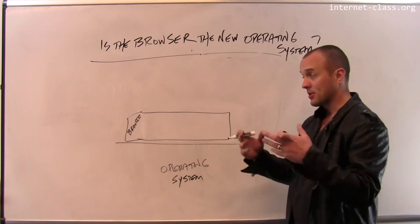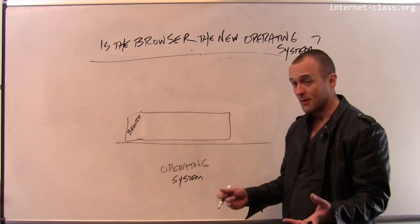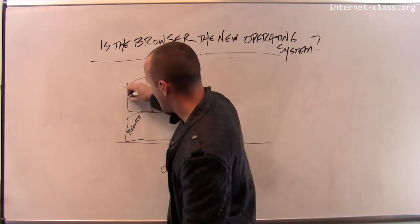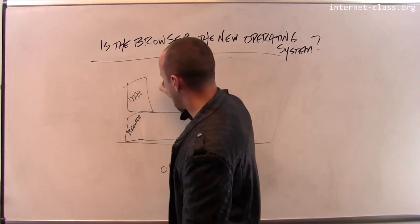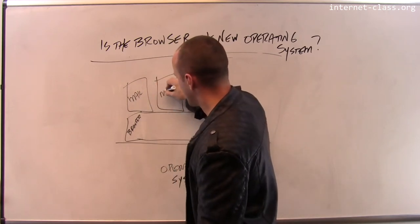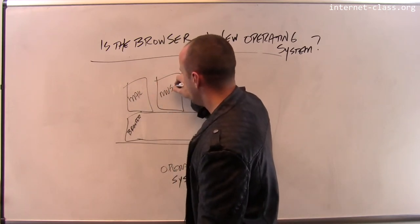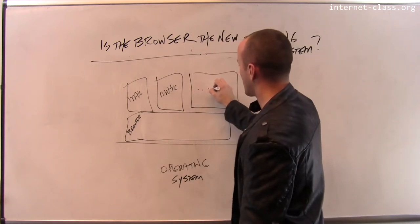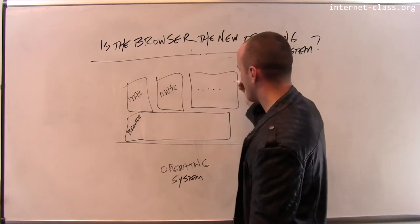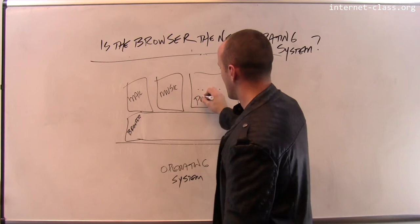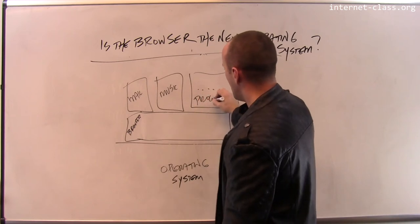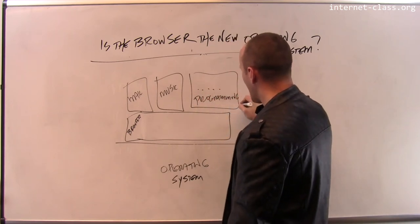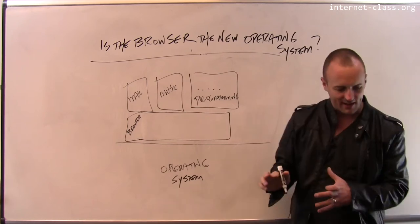The operating system has different applications that run on top of it; the browser has different tabs. Inside one tab I have my mail client, inside a second tab I've got my music going on, and then I have 62 other tabs with various Stack Overflow pages and programming stuff. That's kind of what the modern software stack looks like.